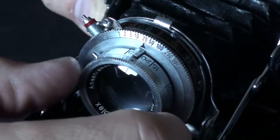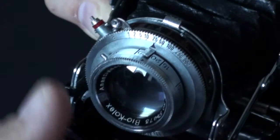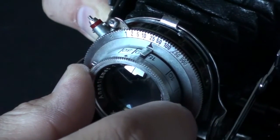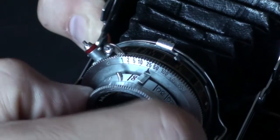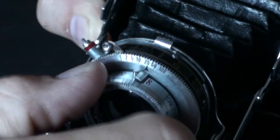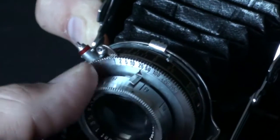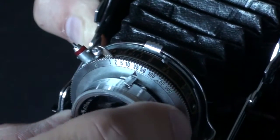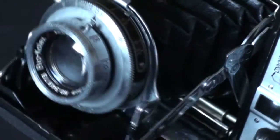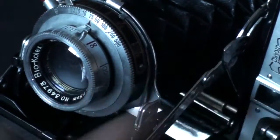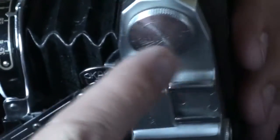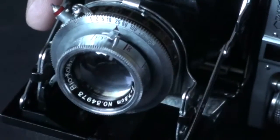In order to focus the camera, you simply grab the front element of the lens, and you focus it. The focus, infinity focus is marked with red. And then, it goes down all the way to three feet. I kind of suck at determining the distance, so I'm going to rely on my nifty calculator here to help me with zone focusing.